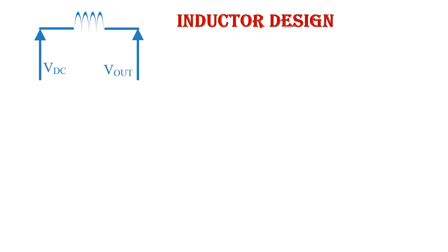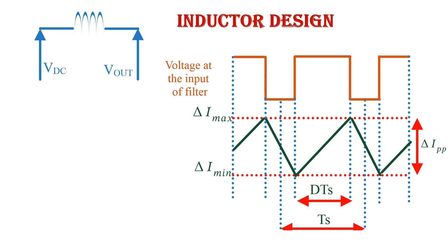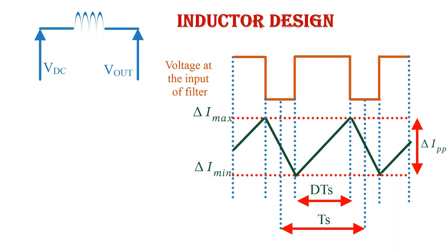Let's start the design with inductor design. The voltage at one end of the inductor is marked as V_dc (the input voltage), and the voltage at the other end is marked as V_out. When we apply sinusoidal PWM, there is a voltage and current in the inductor. Delta I_pp, the ripple current, is the difference between delta I_max and delta I_min.